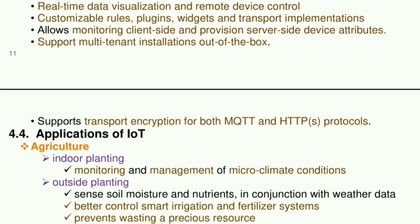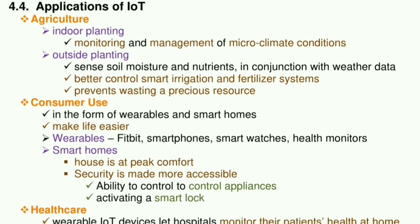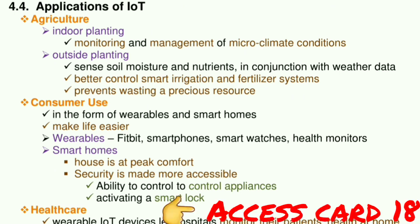Applications of IoT: Agriculture — for indoor planting, monitoring and management of micro-climate conditions; for outside planting, sensors send soil moisture and nutrients data. In conjunction with weather data, they provide better control of smart irrigation and fertilizer systems, preventing waste of precious resources. Consumer use — in the form of wearables and smart homes to make life easier. Wearables include Fitbit, smartphones, and smartwatches.